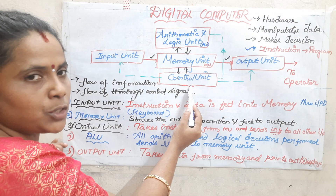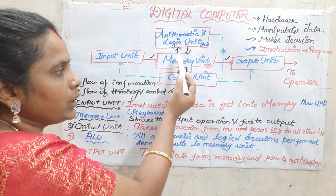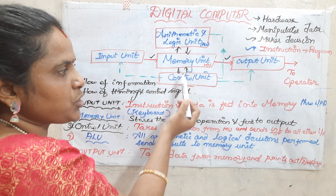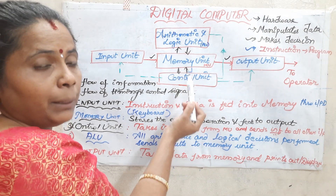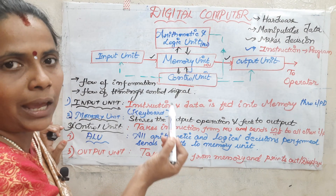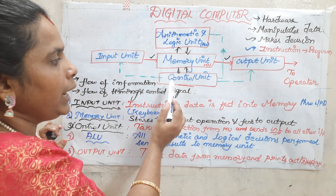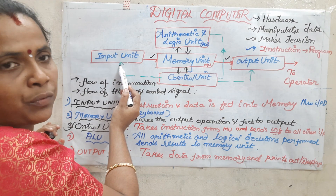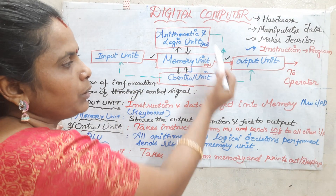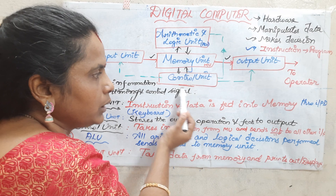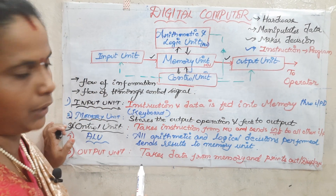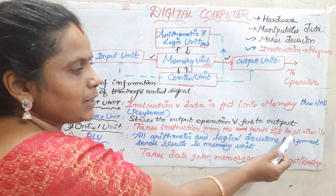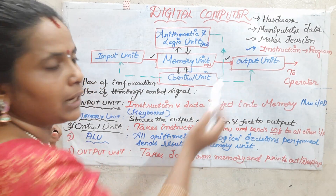Now we will move on to the control unit. The control unit receives instructions from the memory unit — you can see the arrow marks. Whatever instructions come from the control unit, a suitable control action is taken. Based on the instructions received from the memory unit, it either specifies to your input unit, your arithmetic unit, or your output unit depending upon the logic it received. The control unit takes instructions from the memory unit and sends them to all the other units concerned.